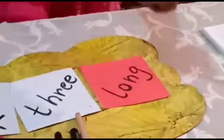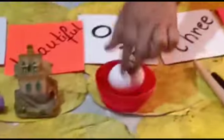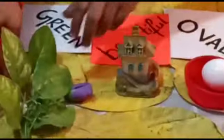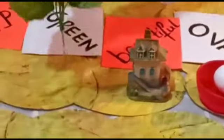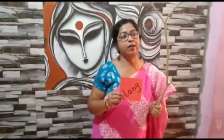They are telling something in detail about the naming words — stick, brushes, egg, house, and leaf. And how are they describing them? Long is describing the size of the stick.